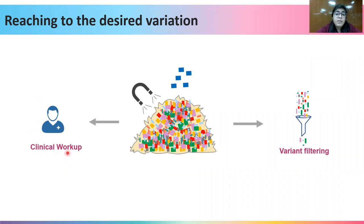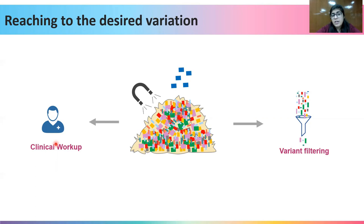If a clinician specifies that the patient is suffering from a channelopathy or cardiomyopathy, then the task of the geneticist becomes easier, because in that case he or she would only need to look at a targeted number of genes to arrive at the diagnosis. The chances of finding the correct variation are therefore higher in the second, more specific case.